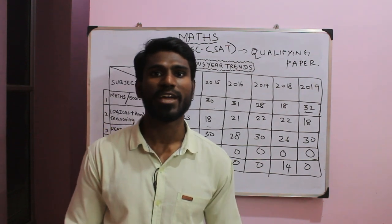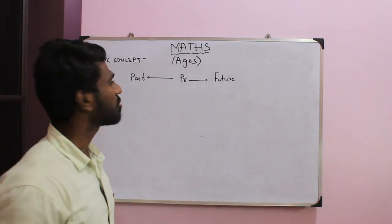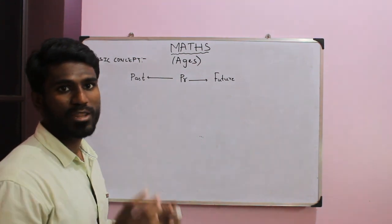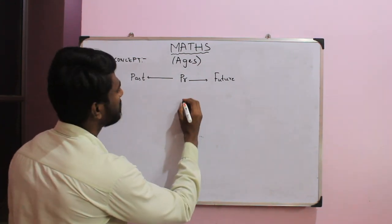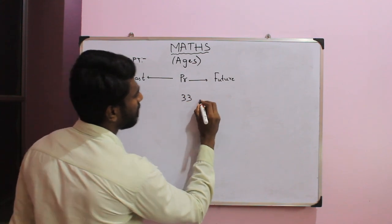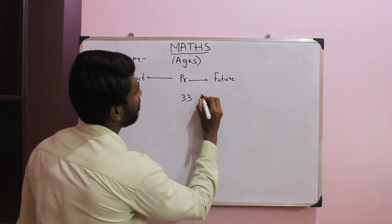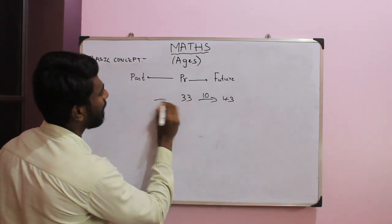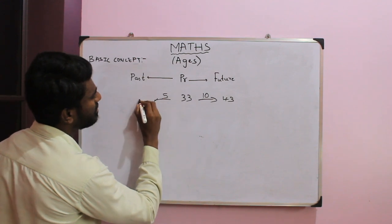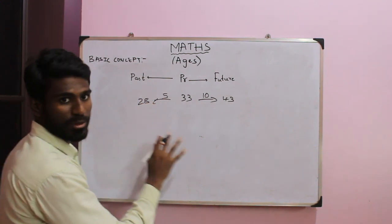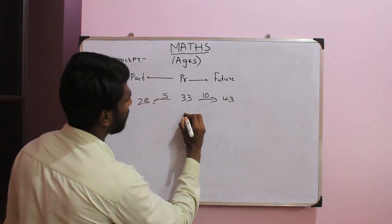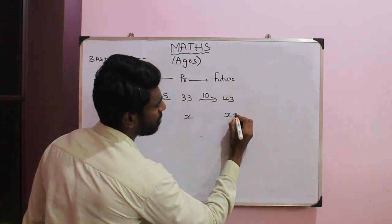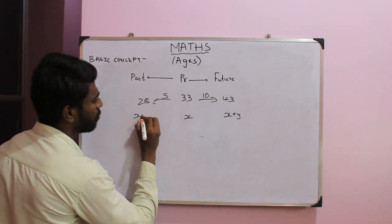Now let's go to the topic: Ages. The basic concept of ages involves present, future, and past. For example, if the present age is 33, then 10 years in the future the age is 43, and 5 years in the past the age is 28. If present age is x, then after y years the age is x plus y, and y years before the age is x minus y.